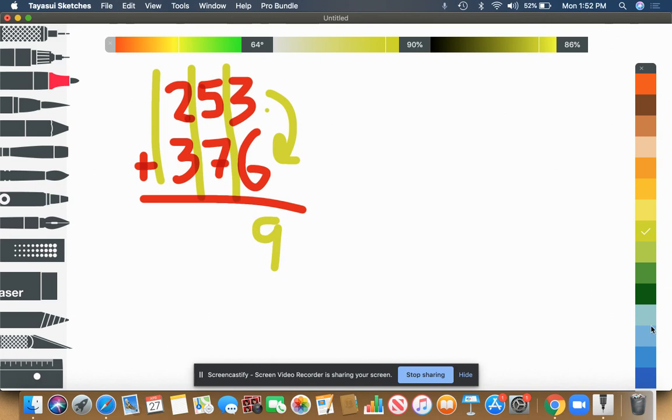Five plus seven, we get 12. Now we don't write 12. We just write the ones digit of 12, which is two. And I carry my tens digit over here to the hundreds column. Now I have three plus two is five, plus that one that I carried over is six.